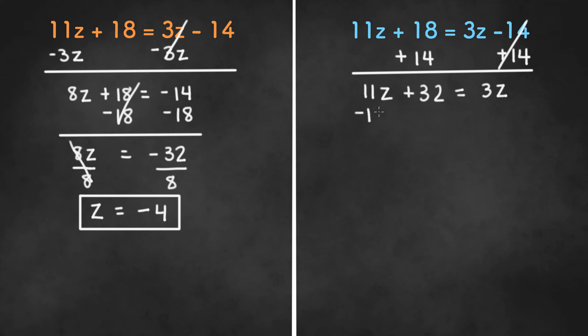Now we will have to subtract 11z from both sides to get 32 on the left hand side and 3z minus 11z, which is negative 8z.